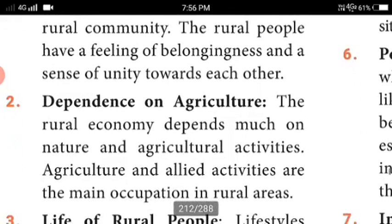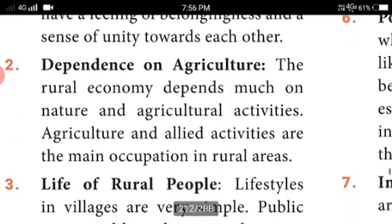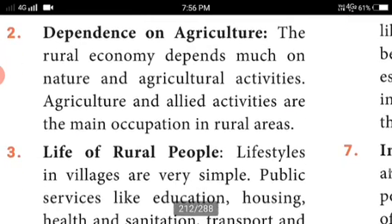Dependence on agriculture: the rural economy depends much on nature and agricultural activities. Agriculture and allied activities are the main occupation in the rural areas, and rural people mostly depend on agricultural activities.